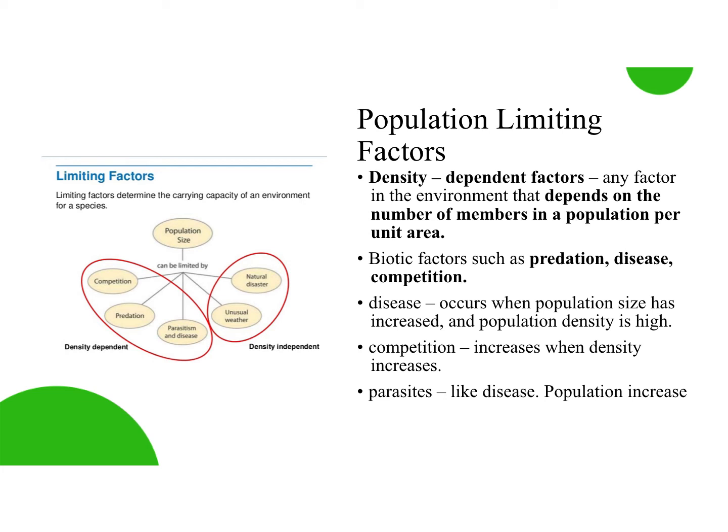Let's look at disease. The more densely populated your population is, the easier it is for disease to spread. Why do you think it's easier for disease to spread in a more densely populated area? Yeah — you're closer, right? Disease can just spread from one host to the next. If you have more disease spreading among organisms, they're going to die from that, so that's going to help limit population growth.